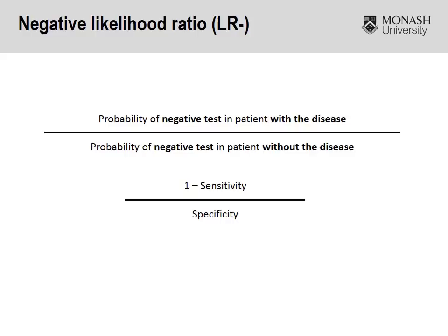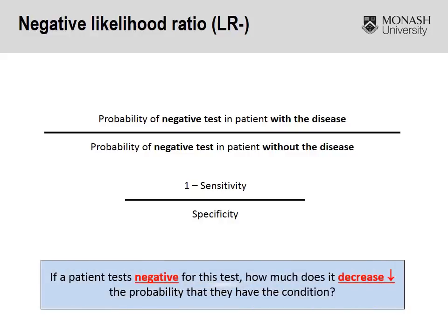On the flip side, we've got our negative likelihood ratio. The formula for that is one minus sensitivity divided by specificity. Basically, a negative likelihood ratio is telling us: if a patient tests negative for this test, how much does it decrease the probability that they have the condition?